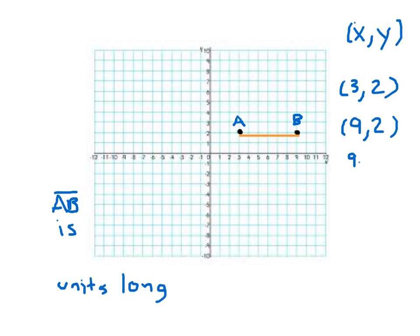9 minus 3 is 6. Since the x-coordinates are the ones that are different, we compared them to find out how far apart they were: 9 minus 3 equals 6. So we say that line segment AB is 6 units long. From A to B, counting the units, that's 6 units long. Not always will we have a graph where we can count.